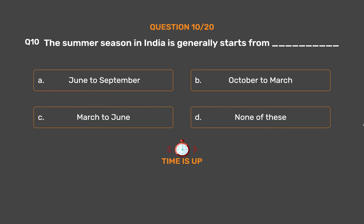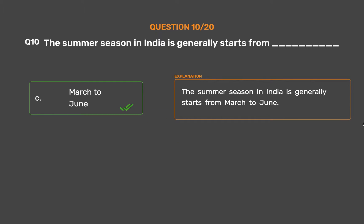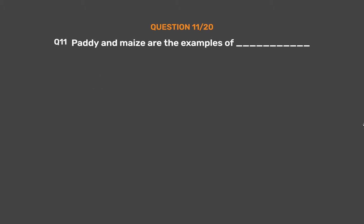The correct answer is Option C: March to June. The summer season in India generally starts from March to June.